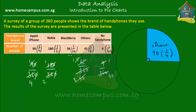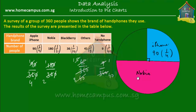Next are Nokia users — 180, or half the pie. If the pie is cut into two slices, one of those slices represents Nokia phone users. The pink color is for Nokia users — 180 in number, which is half the pie.